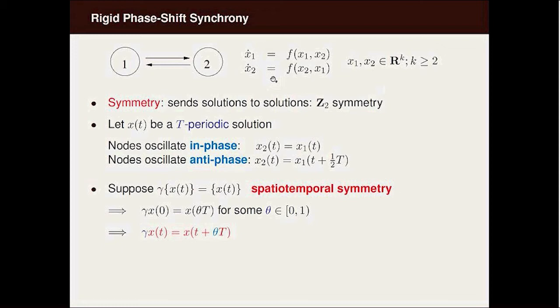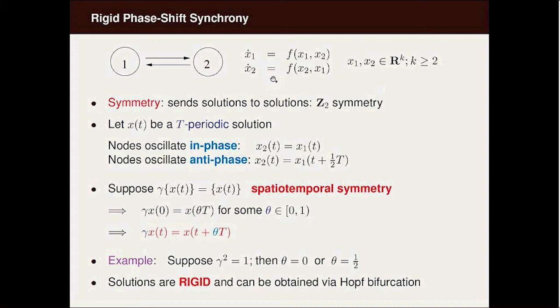Because x of t is a solution and gamma of x of t is a solution, we see that gamma x of t must be x of t plus theta T for all time because they have the same initial conditions when time is zero. Suppose that gamma is an order 2 element, so gamma squared is the identity. Then we're going to get x of t plus 2 theta T equals x of t, that is, theta must be equal to zero or a half mod one.